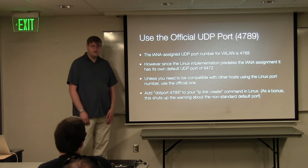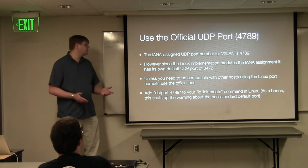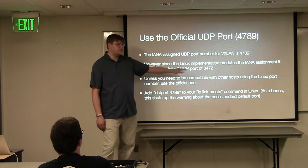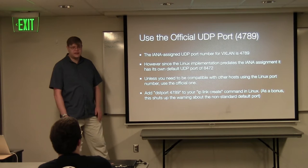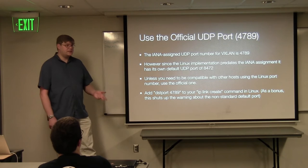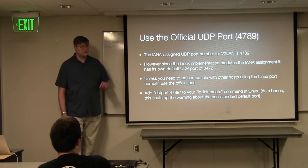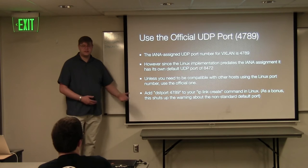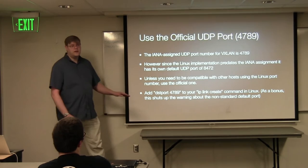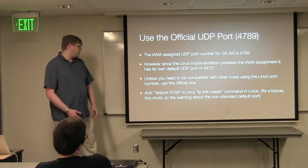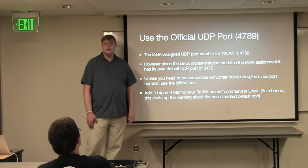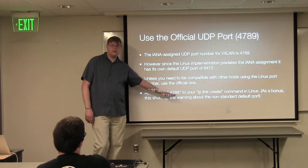Use the real port. IANA was a little behind the curve on assigning a real port number, but they did — it's 4789. Linux went ahead and did their own thing before that happened, using 8472. But in the interest of letting IANA be relevant and interoperating with other systems — your BSDs, your switches, whatever — use the official port 4789. Docker uses the official port. On Linux, when you do the IP link create command to get a VXLAN interface, you specify DST port 4789 and it'll do the right thing. If you don't do that it gives you about a five-page warning about how it's using the default Linux port.